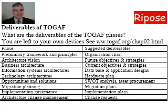Phase 6, the Opportunities and Solutions, should produce a SWOT analysis and asset procurement plan. Phase 7, Migration Planning, should produce migration plans. Phase 8, Implementation Governance, should produce the implementation plan. And finally, but not least, the Architecture Change Management should produce change requests. These are only suggested ones.